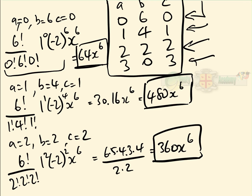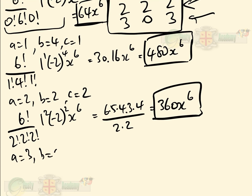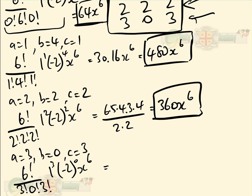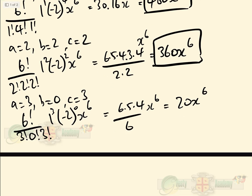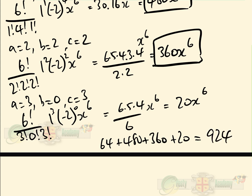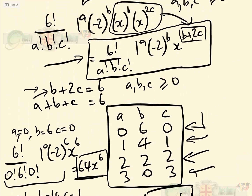Finally, for a equals 3, b equals 0, c equals 3: substituting gives 6 factorial over 3 factorial times 0 factorial times 3 factorial, times 1 cubed, times (minus 2) to the power of 0, times x to the 6. That is 6 times 5 times 4 over 6, times x to the 6, which equals 20x to the 6. Collecting all four terms: 64 plus 480 plus 360 plus 20 equals 924 as the coefficient of x to the power of 6 — the same answer as the quick method.